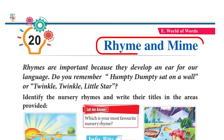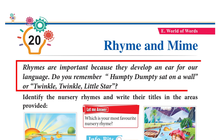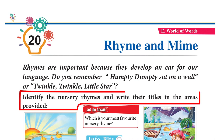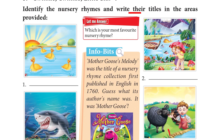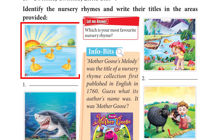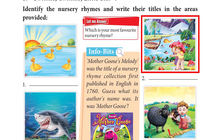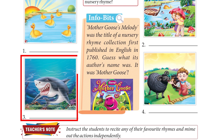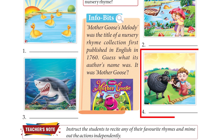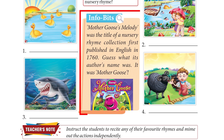Chapter 20: Rhyme and Mime. Rhymes are important because they develop an ear for our language. Do you remember 'Humpty Dumpty sat on a wall' or 'Twinkle Twinkle Little Star'? Identify the nursery rhymes and write their titles: Five Little Ducks, Rain Rain Go Away, Baby Shark, Baa Baa Black Sheep. Info Bits: Mother Goose Melody was the title of a nursery rhyme collection first published in English in 1760.